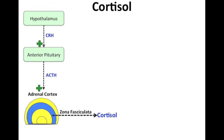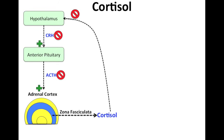If we have too much cortisol in our body, cortisol will negatively feedback the hypothalamus, causing inhibition of CRH. So there's no more CRH being released, which eventually leads to decreased secretion of ACTH as well. This is how we maintain cortisol levels in our body.